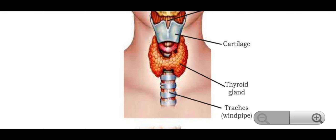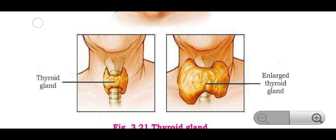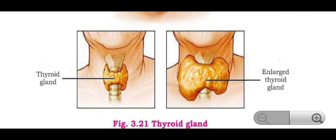The thyroid gland has a butterfly shape and is located near the trachea, which is the windpipe. In the figure, the normal thyroid gland is shown, and in another figure, the enlarged thyroid gland representing goiter is also shown.